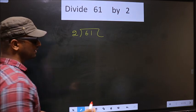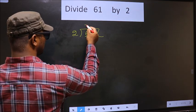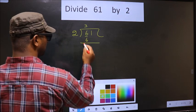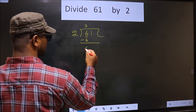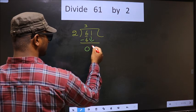Next. Now here we have 6. When do we get 6 in 2 table? 2, 3, 6. Now you subtract. 6 minus 6, 0. Now you bring the beside number down, that is 1.